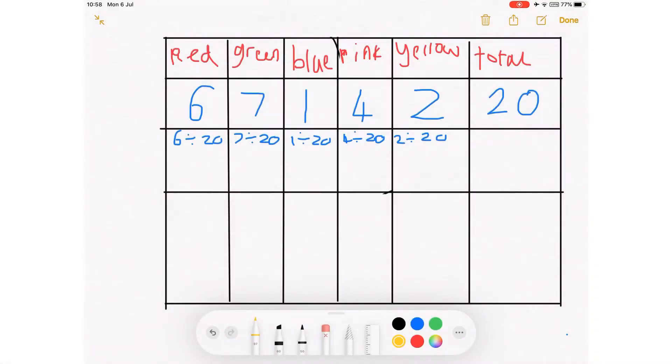The answer to the first one is 0.3, and 0.3 as a percentage is 30 percent. For the second one, it is 0.35, and as a percentage that's 35 percent. For the third one, it's 0.05, and as a percentage that's 5 percent. For the fourth one, it's 0.2, and as a percentage it's 20 percent. For the last one, it's 0.1, and that's 10 percent. So well done for those of you who got those right.